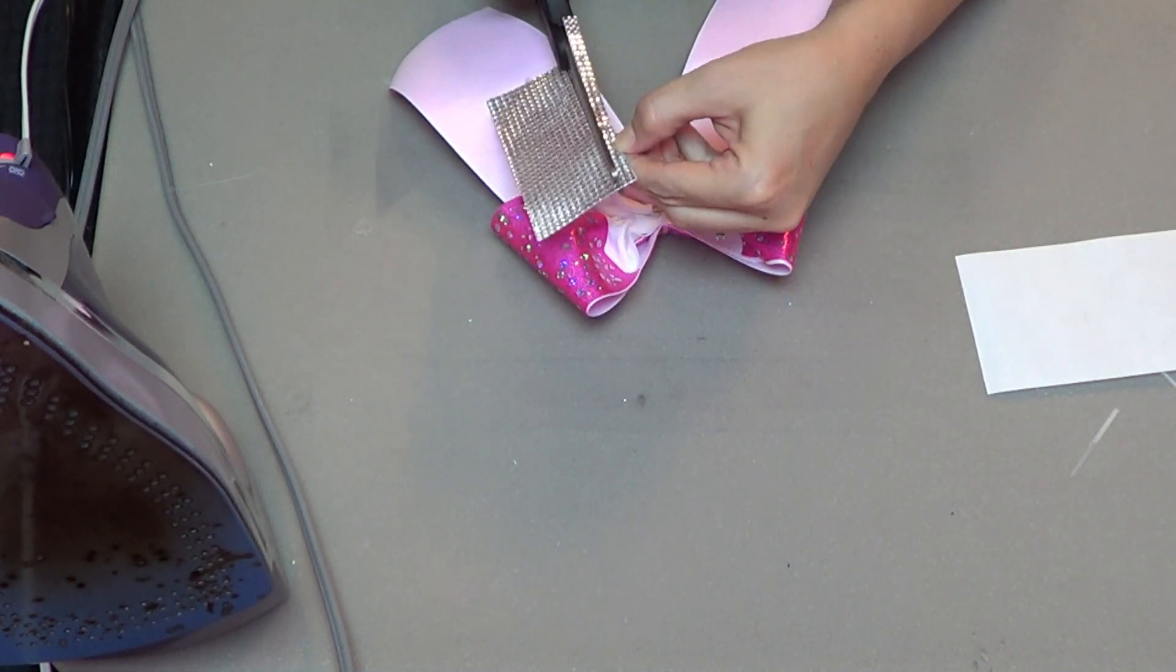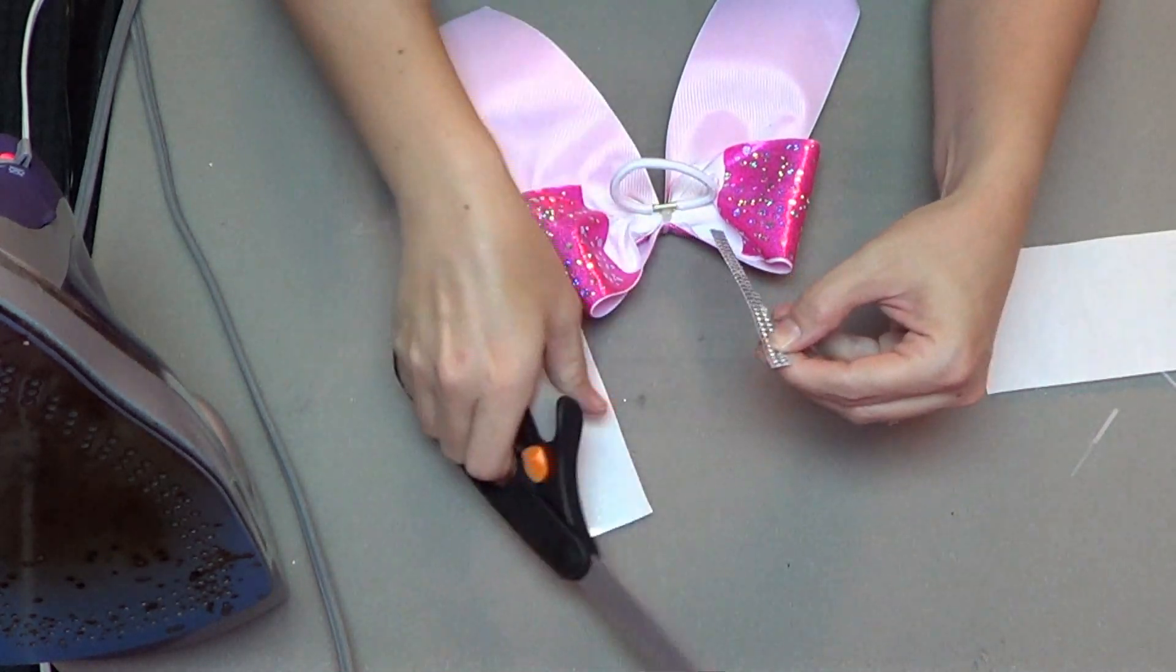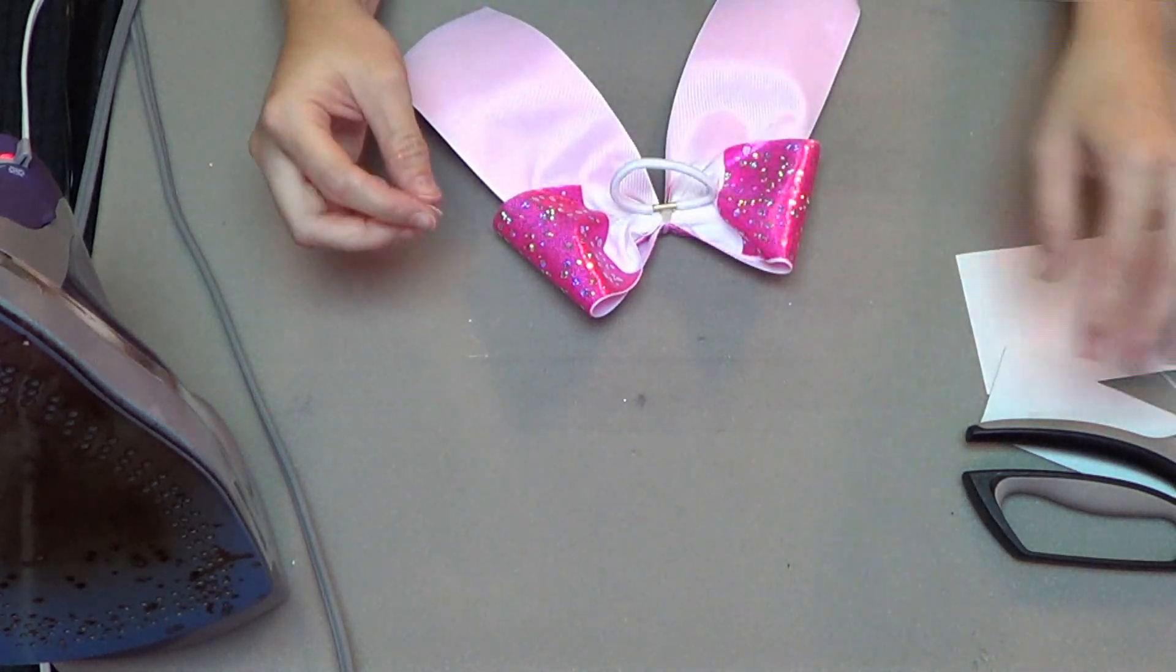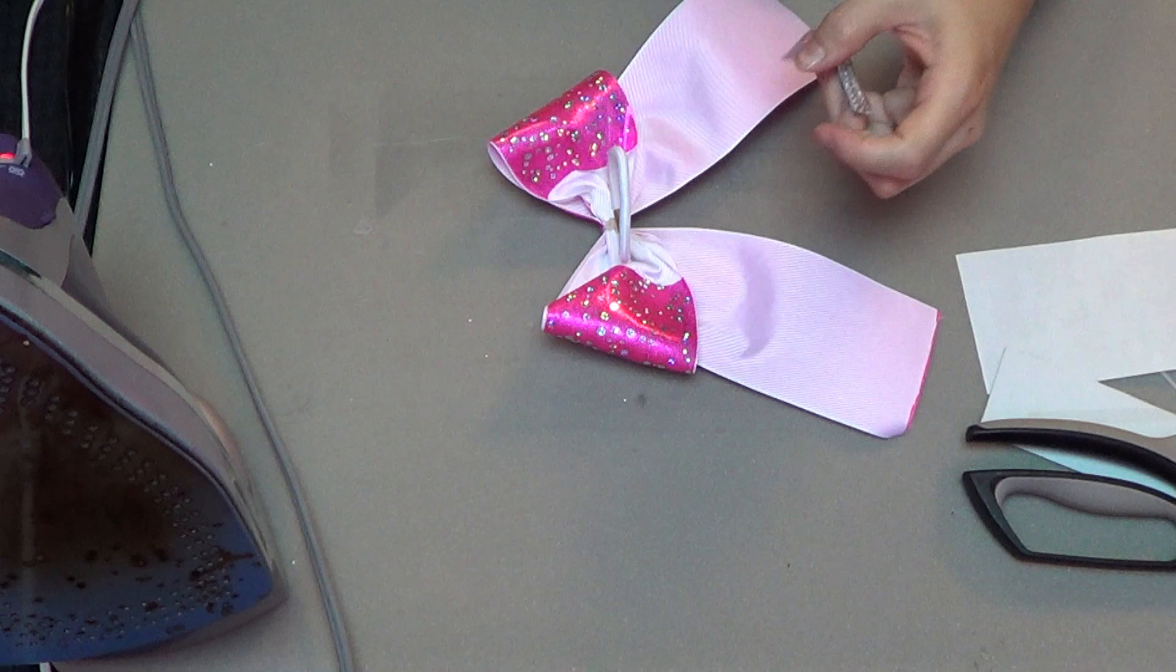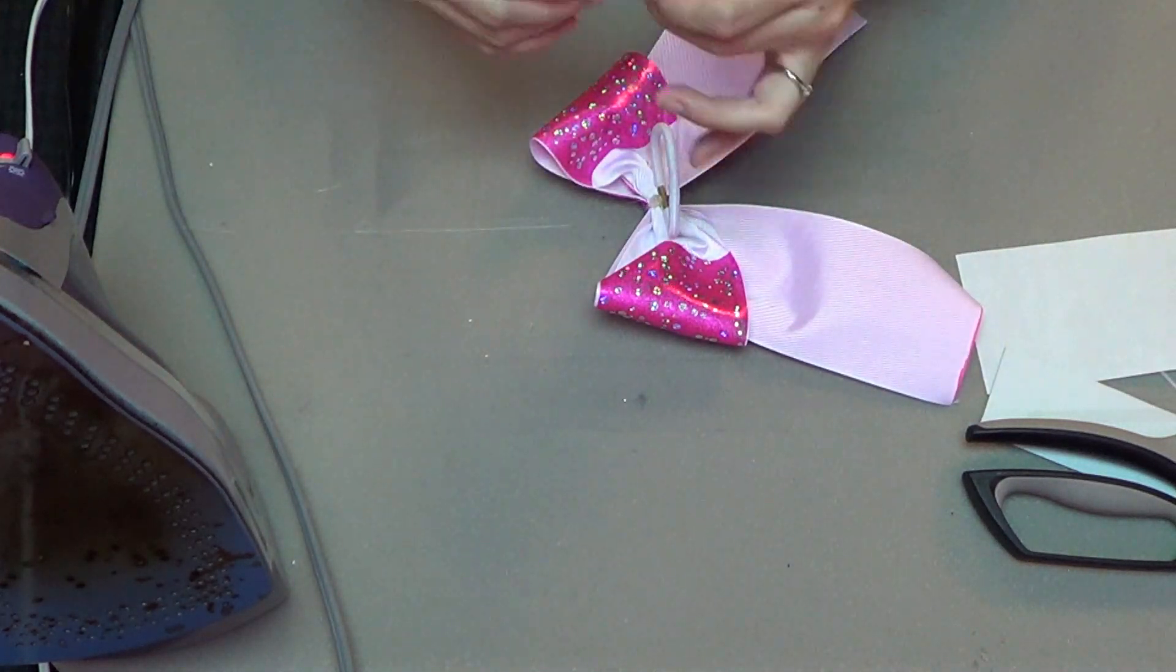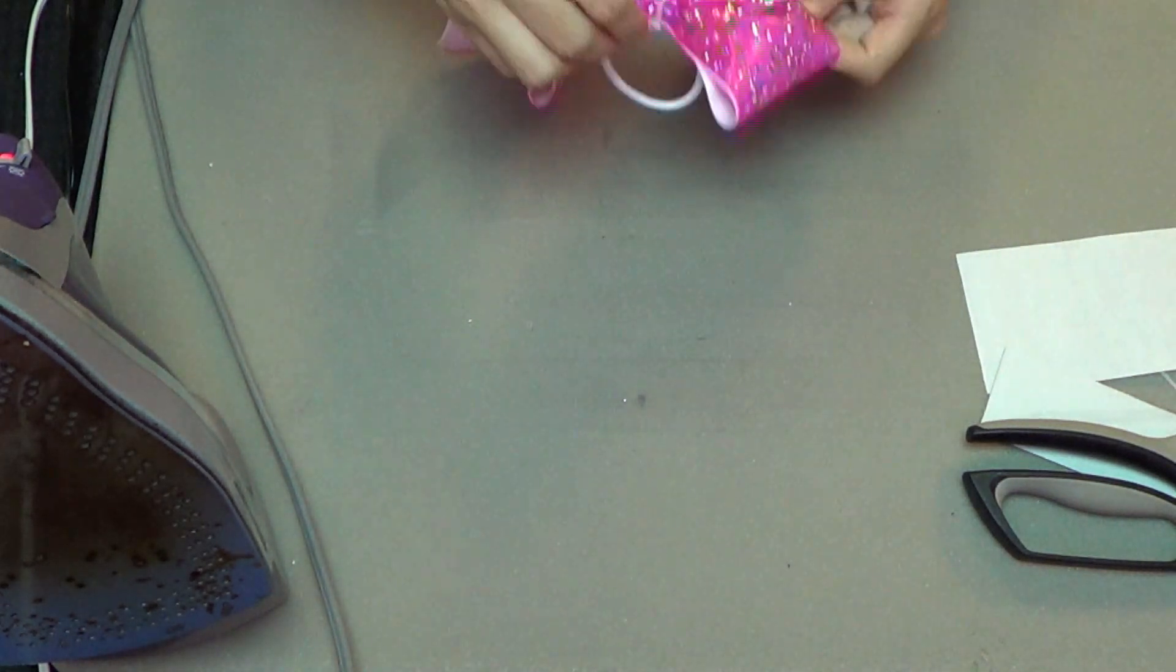They come in a sheet that you can easily cut apart to one row of gems, two or three, whatever you're looking for. They are self-adhesive, but for a cheer bow I always add extra glue. I've never had one pop open.